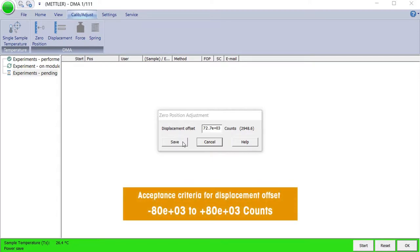If the calculated displacement offset parameter is within the tolerance limits, click Save to adjust the instrument. Otherwise, discard the calculated parameter value by clicking Cancel.